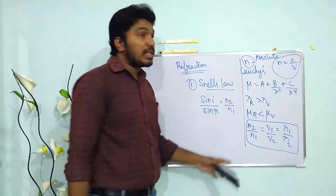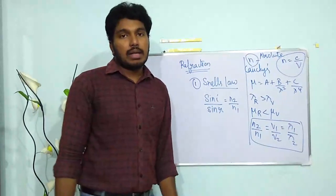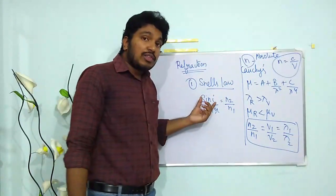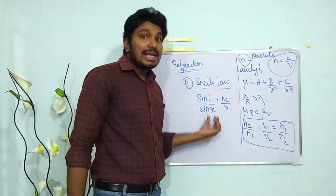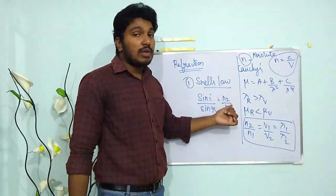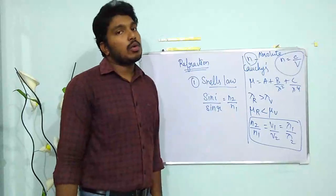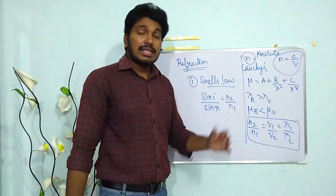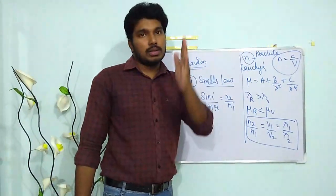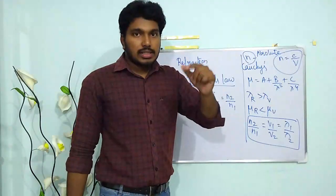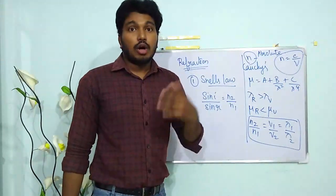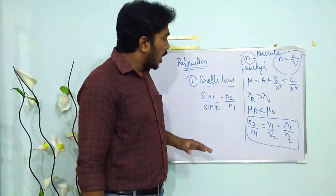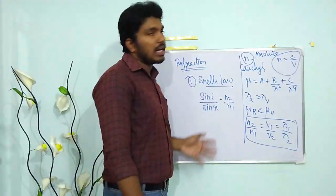So n2/n1 = v1/v2 = λ1/λ2. The first law — Snell's Law — says that sin(i)/sin(r) is a constant equal to the relative refractive index n2/n1. The second law, similar to reflection, states that the incident ray, the refracted ray, and the normal all lie in the same plane.